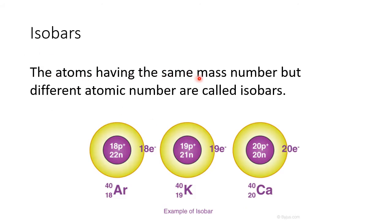The next type is isobars. Atoms having the same mass number but different atomic number are called isobars. For example, consider argon: it has 18 protons, so its atomic number is 18, and it has 22 neutrons. Its mass number is 18 plus 22, which equals 40.